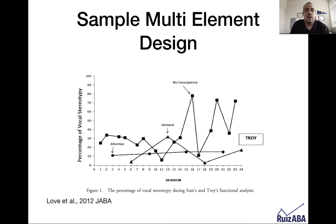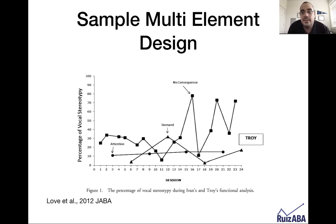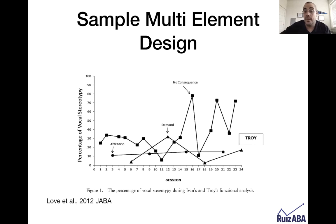Here's a sample multi-element design graph. Notice there's a no-consequence condition represented by squares, a demand condition with triangles, and an attention condition with circles — they're measuring vocal stereotypy in this graph. None of these are noticeably different from the no-consequence condition, so you would likely say this is either inconclusive or maintained by automatic reinforcement — likely automatic because of the variability in vocal stereotypy across each condition with no detectable pattern. You're comparing everything to the no-consequence condition and looking for separation.